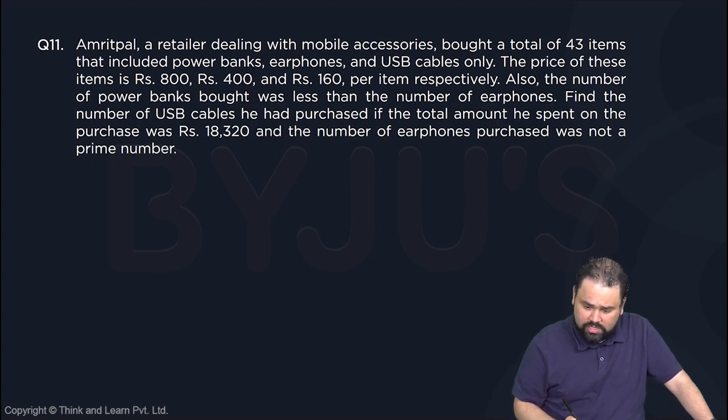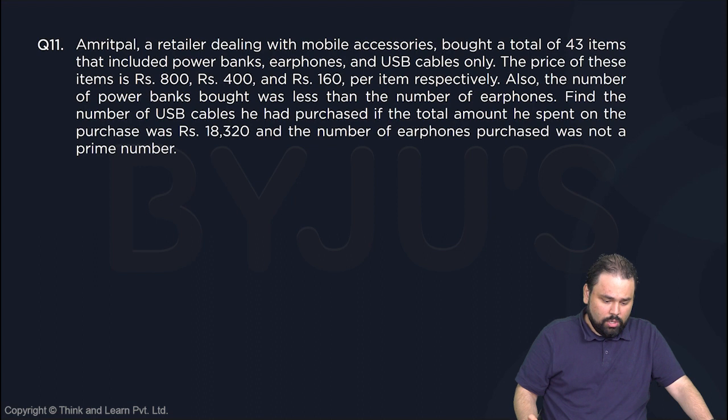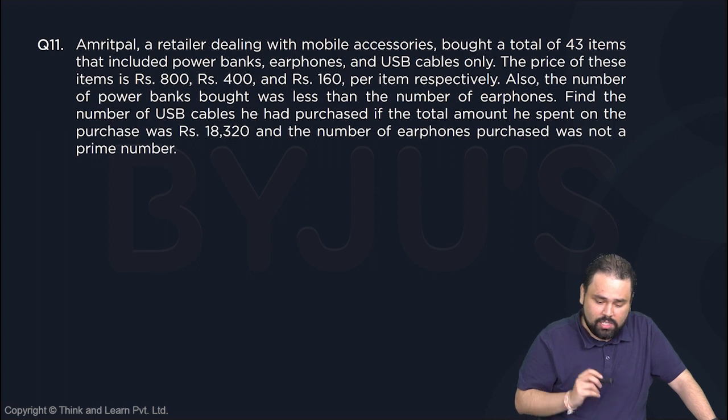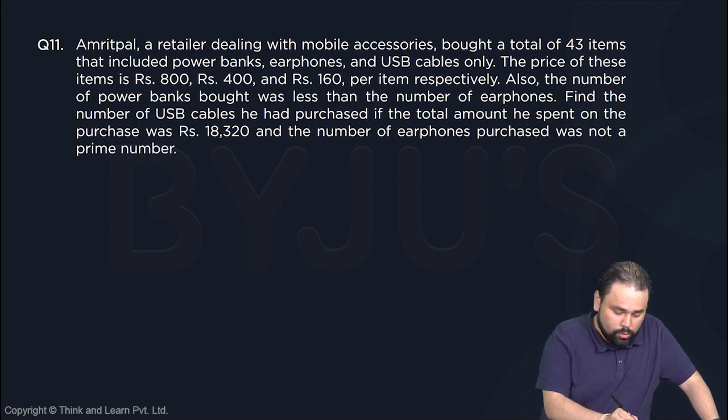Let's see if we have more space to solve this. They've given us one more page, so I can start here and move there if needed. Amrit Pal bought a total of 43 items - power banks, earphones, and USB cables. So power bank plus earphone plus USB equals 43.